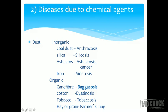Examples of inorganic dust diseases: coal dust causes anthracosis, silica causes silicosis, asbestos causes asbestosis and can cause lung cancer, stomach cancer, and mesothelioma — a pleural or peritoneal cancer. Iron causes siderosis. For organic dust: cane fiber causes bagassosis, cotton fiber causes byssinosis, tobacco causes tobaccosis, and hay or grain causes farmer's lung.